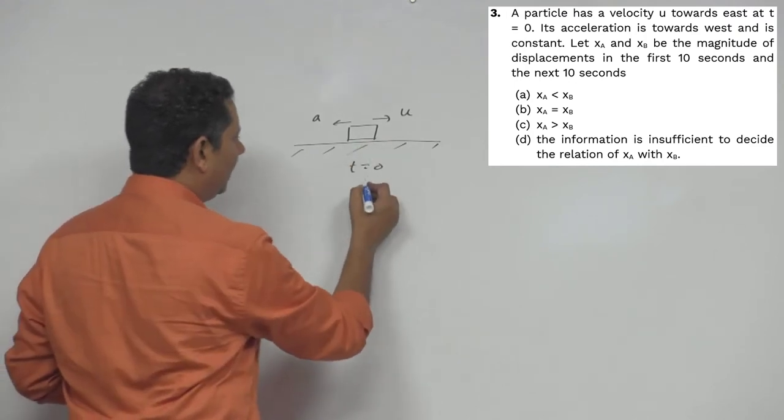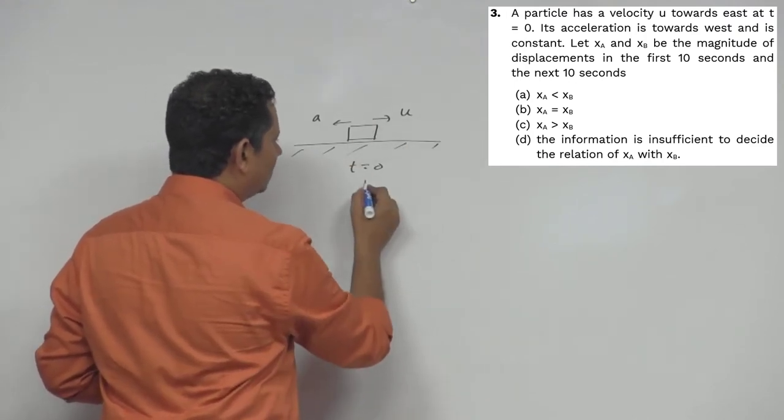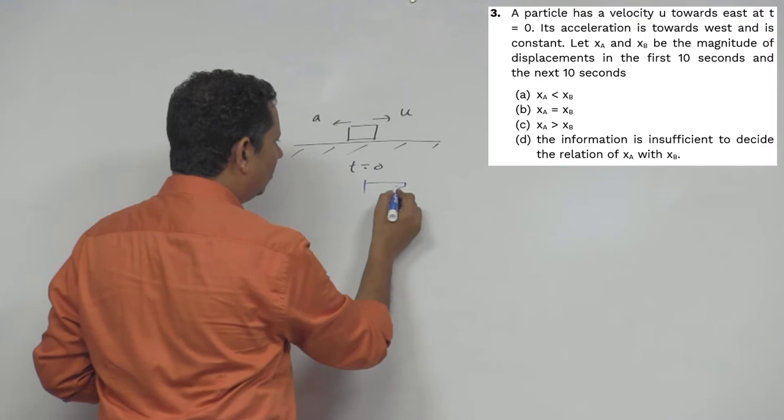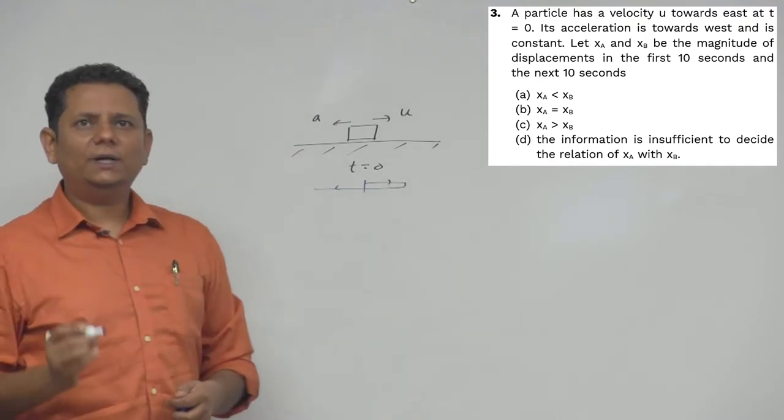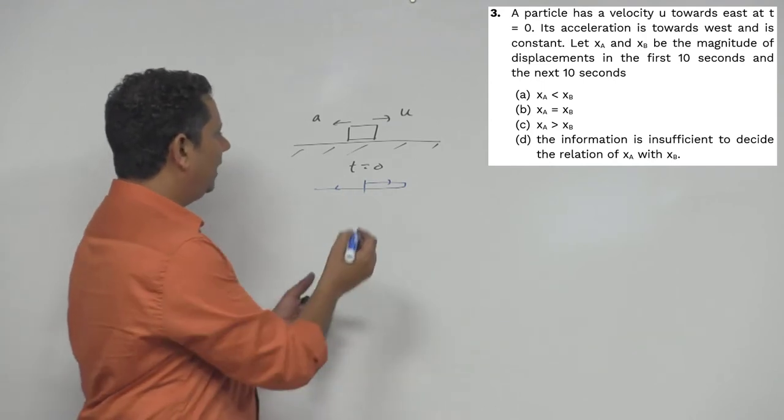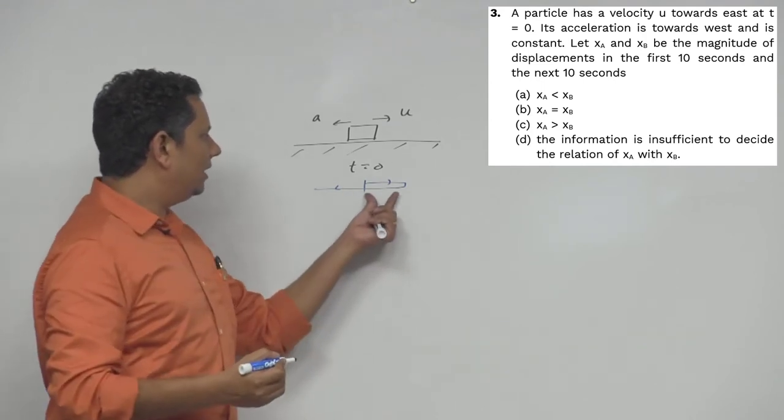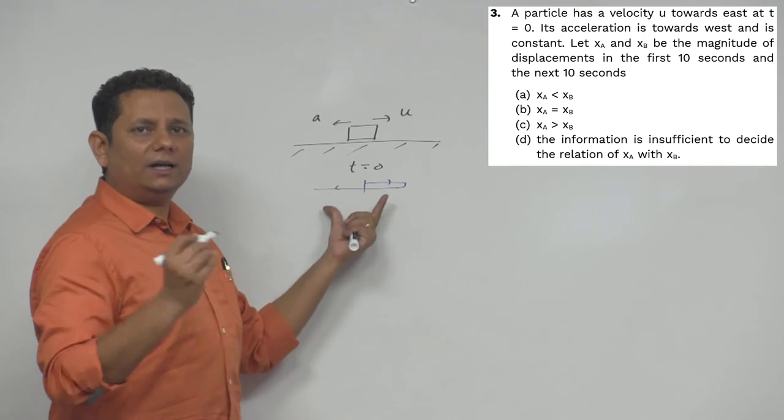This particle will first move because it has initial velocity, so it will go here. After that it's possible that at some place it may return back. Now here we need to compare the displacement in the first ten seconds and the displacement in the next ten seconds.